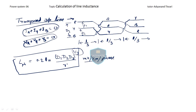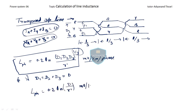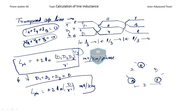If D1 = D2 = D3 = D, then L_phase = 0.2 × ln(D / R') mH per km. This special case occurs when the transmission line conductors are arranged in an equilateral triangle, where all inter-conductor distances are equal to D. This is the formula for inductance in the equilateral triangle configuration.